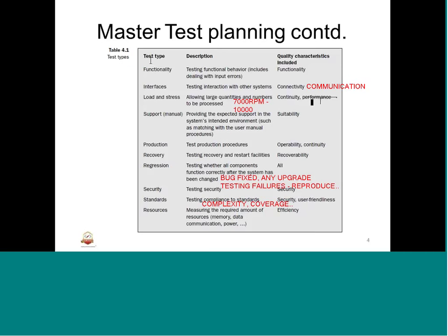These are some of the test types listed. We can add more based on the need of the complexity we have. This is very important in terms of master test planning. These test types can be categorized broadly - you can categorize communication and resources as well. It is objective and based on the complexity of the system.